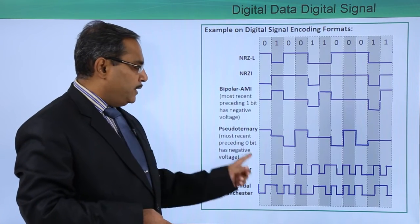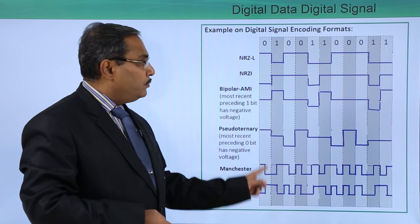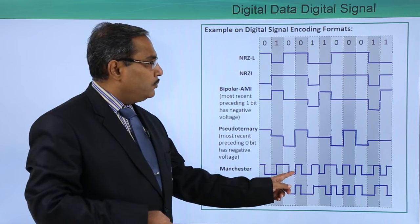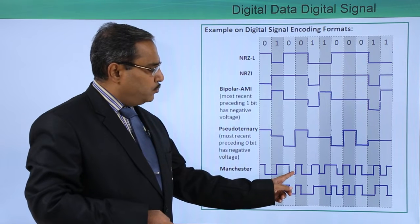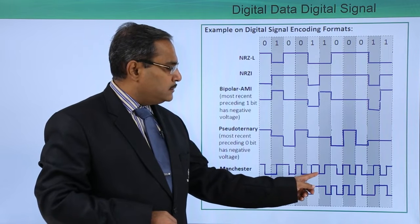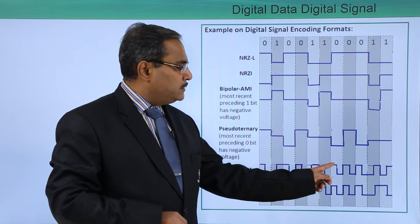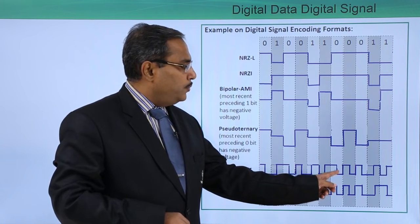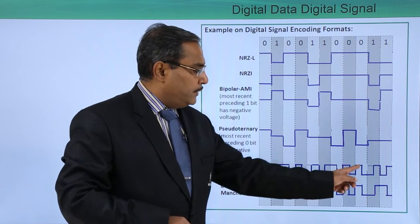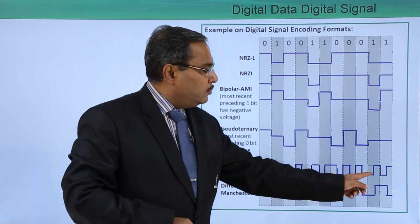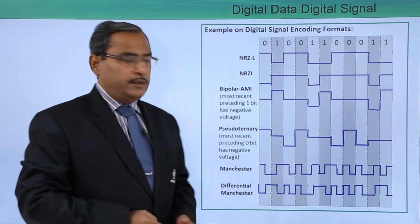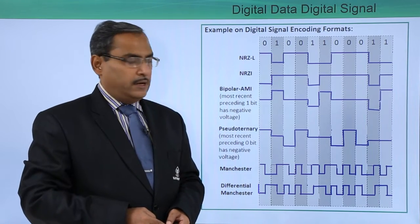Let us see the Manchester example. 0 means high to low, 1 means low to high, 0 means high to low, 0 means I go to high then low, 1 means low to high, 1 means low to high, 0 means high to low, 0 means high to low, another 0 means high to low, 1 means low to high, and 1 means low to high. In this way Manchester encoding has been done.